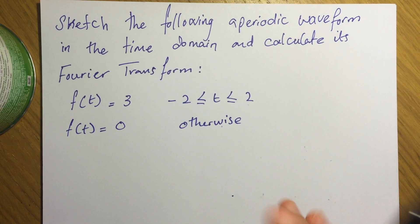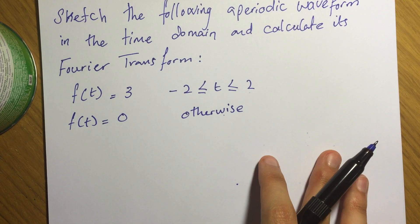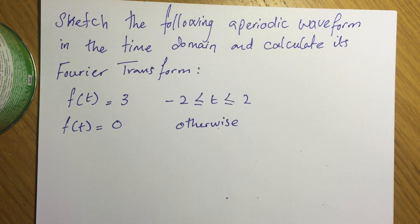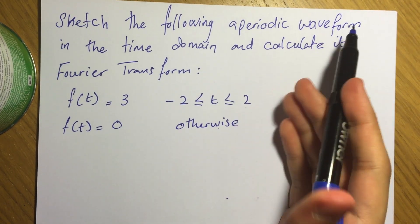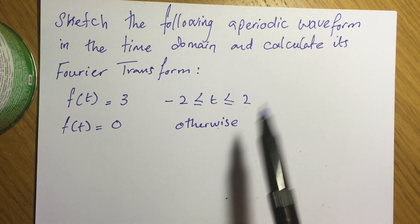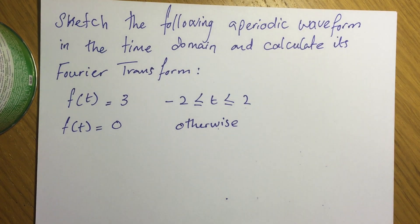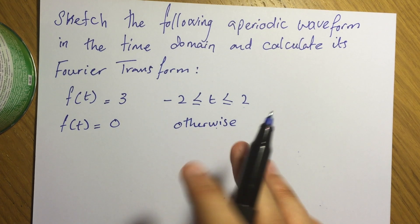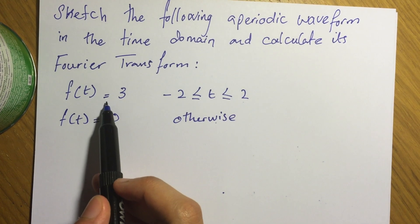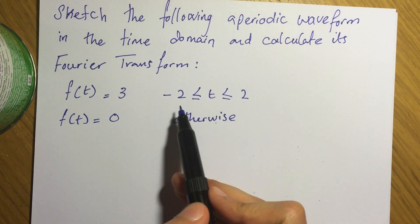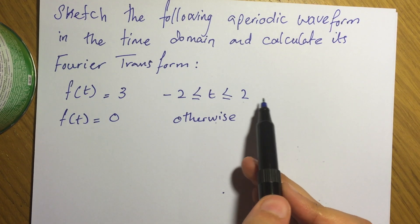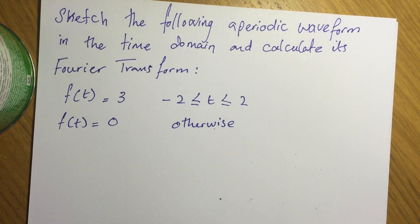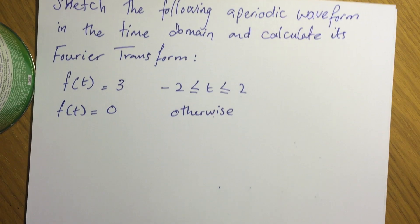Hi, I'm going to solve a Fourier transform question. This is a common question in exams. It says sketch the following waveform in the time domain and calculate its Fourier transform. So basically f of t is 3, and the limit is negative 2 to 2, otherwise it's zero. So how do we actually sketch that?